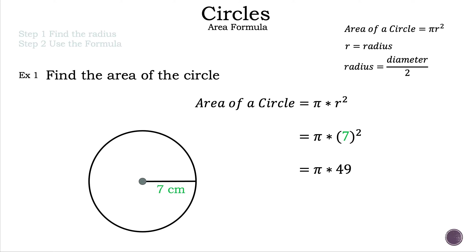49 is the result of seven times seven, so now we have pi times 49. Our next step is to reorder those numbers and write it as 49 pi — we write whole numbers first, then irrational numbers second. Since 49 is a whole number it goes first, and since pi is irrational it goes second. Our next step is to add the units, which are centimeters squared since we're dealing with area.